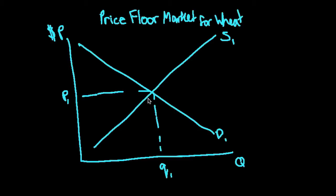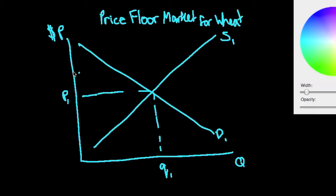We are going to set a price floor, so they are going to set a price above the market equilibrium price. So the government sets a price floor up here, so what does that mean?